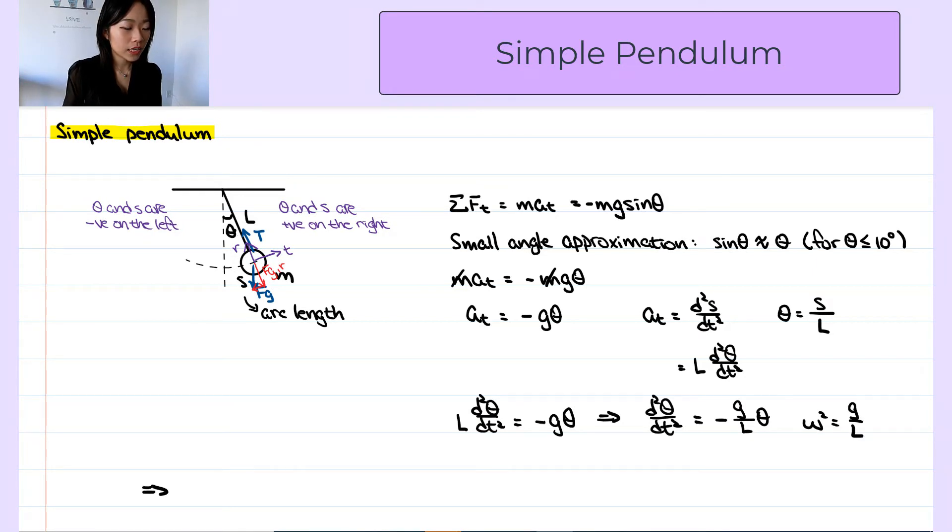Then equation of motion is second derivative of theta with respect to time equals negative omega squared times theta, which is the equation of motion for simple harmonic motion.